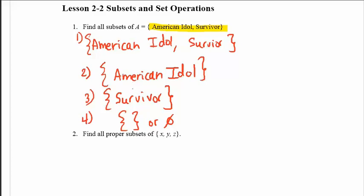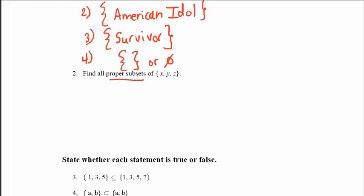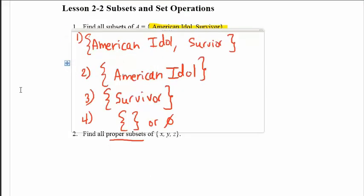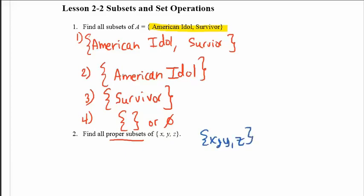Now let's find all proper subsets of X, Y, Z. So unlike the first problem where I listed the original set because every set is a subset of itself, I would not include X, Y, Z in my list of proper subsets. A proper subset has to be smaller in size than the original.